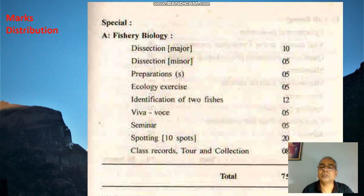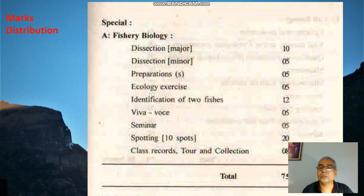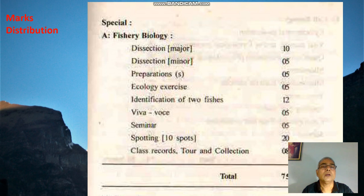Viva voce is 5 marks; seminar, which has probably already been taken in your department, is 5 marks; spots — 10 spots — total marks allotted is 20 marks; and for class records, tour and collection, 8 marks. In total it comes to 75 marks.